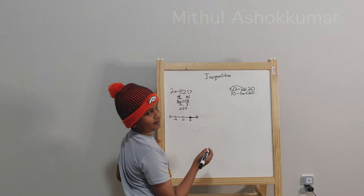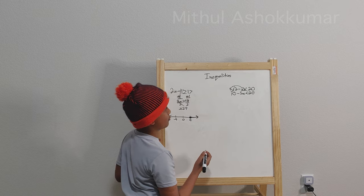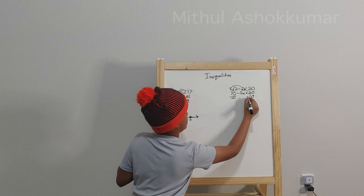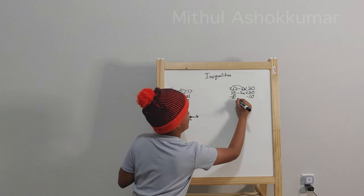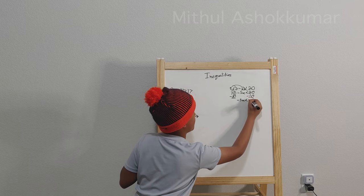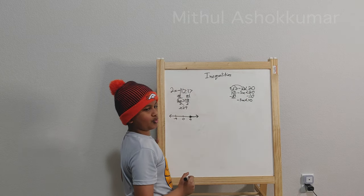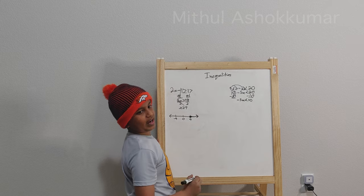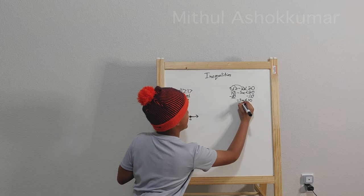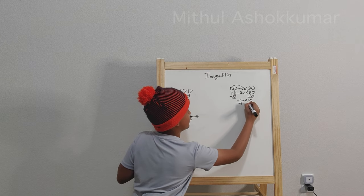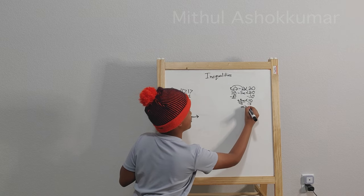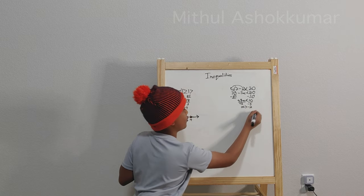But how do I get negative 5x by itself? We subtract 10 from both sides — minus 10, minus 10. Those cancel out, so we have negative 5x is less than 10. And now I want to get rid of the negative 5, so we divide both sides by negative 5. The negative 5 cancels out, so we have x is greater than negative 2.